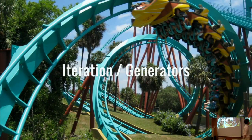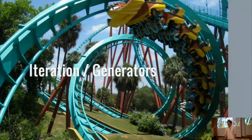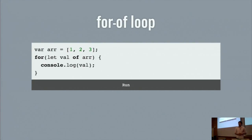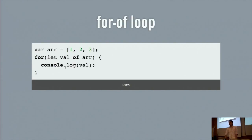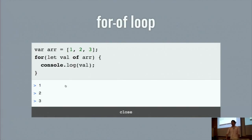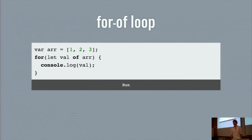Next is iterations and generators, which are quite new ideas in JavaScript. First, they introduce 'for...of', which is a new loop. Let's say you have an array — you can use 'for...of' on it, and the variable will be each element in the array. So it will output 1, 2, 3. This is really simple.